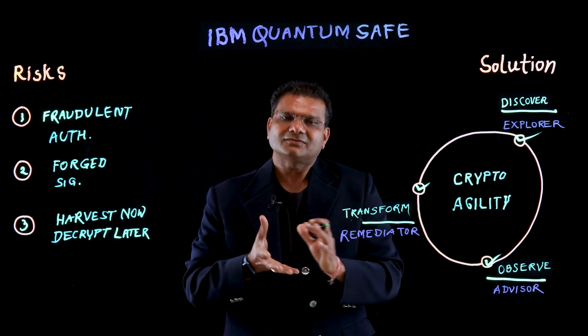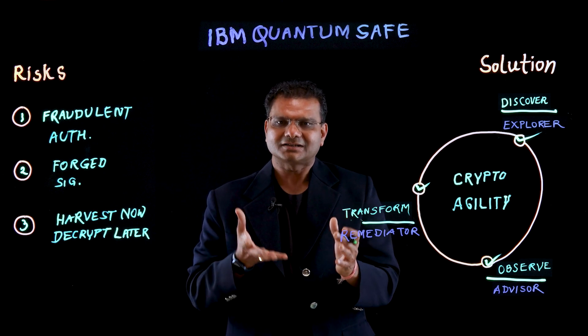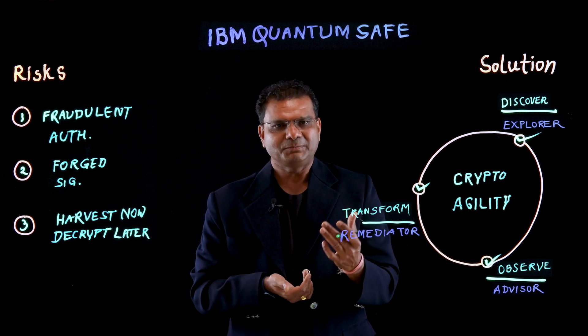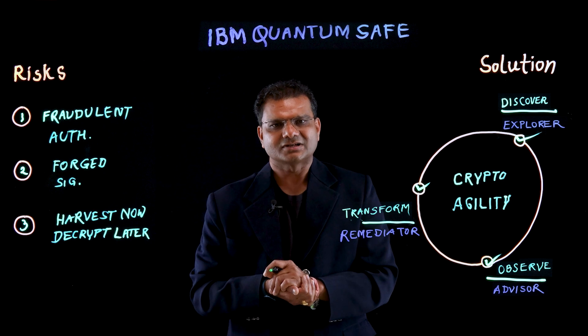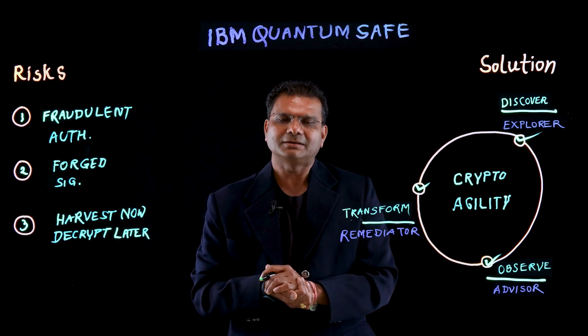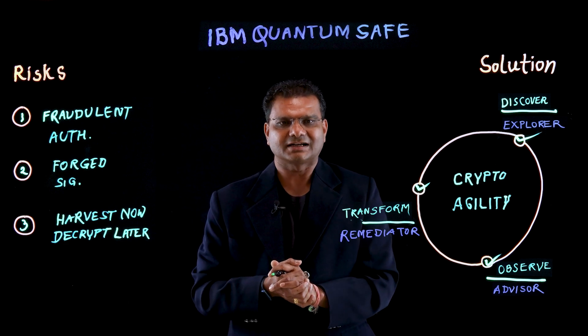IBM QuantumSafe Remediator is a capability that allows you to remediate with quantum-safe algorithms, quantum-safe key management, and certificate management capabilities to help you be crypto-agile. There are a set of remediation patterns within Remediator that enable you based on your requirements in terms of VPN, proxy, and TLS connections — all based on best practices aligned to current client needs. IBM QuantumSafe can help any organization not only prepare for the post-quantum cybersecurity landscape, but also improve and maintain their overall cybersecurity hygiene. To learn how your organization can prepare for the quantum era, check out the links below.